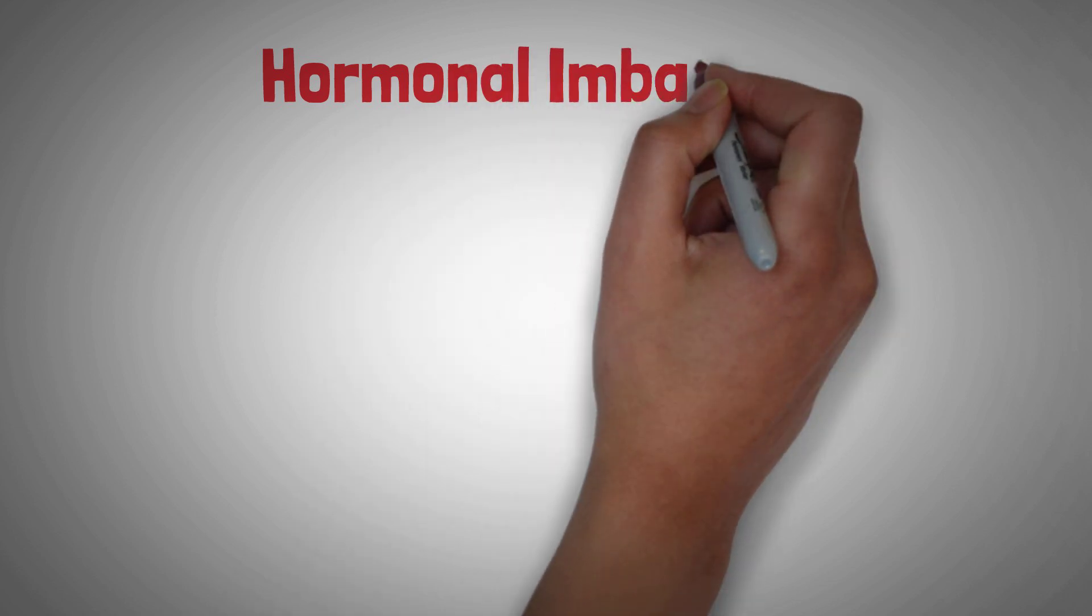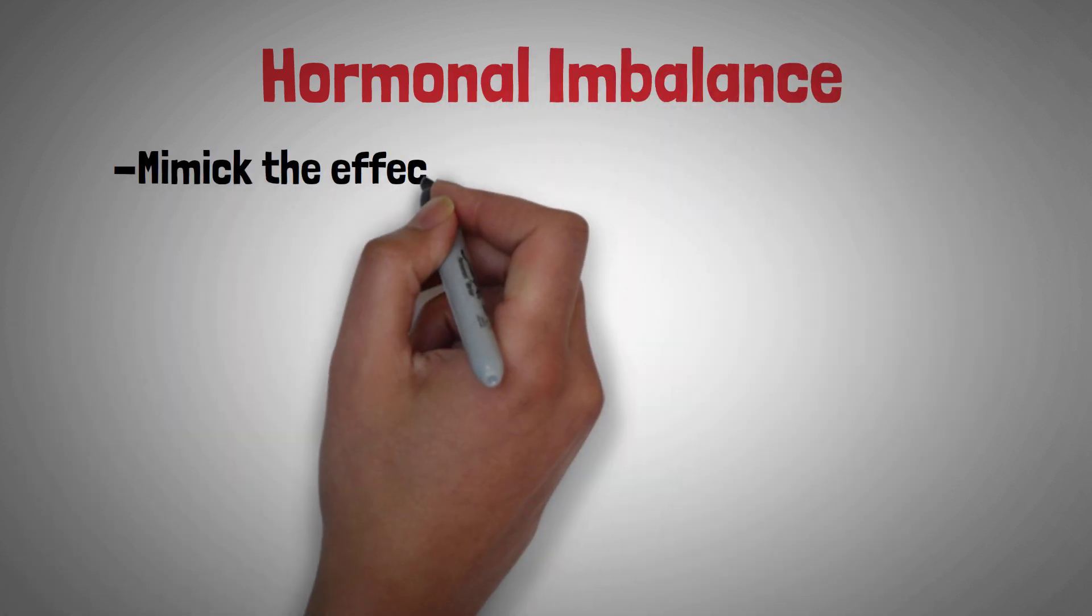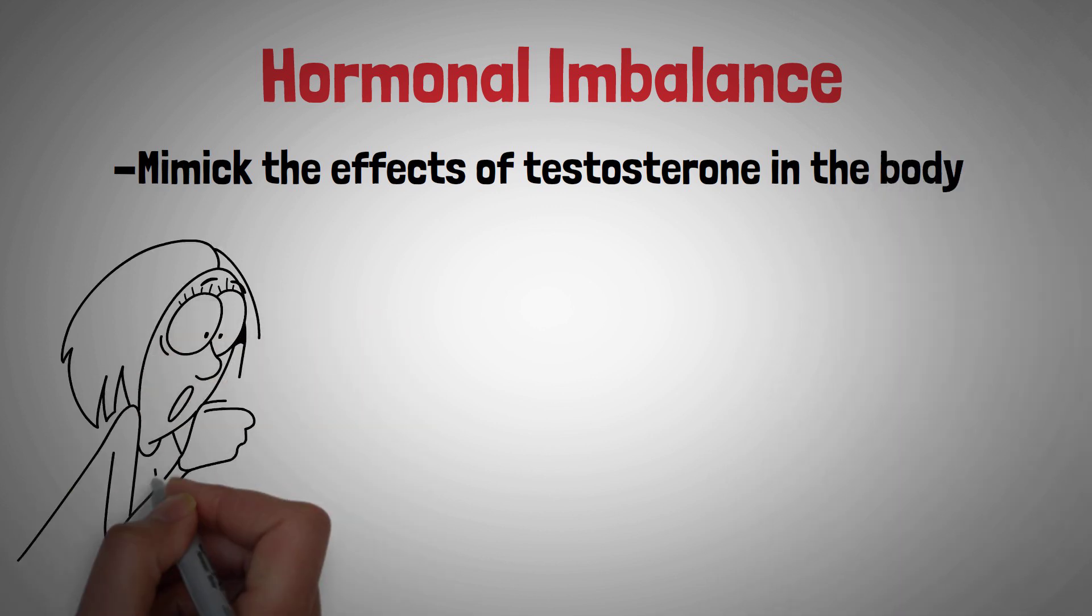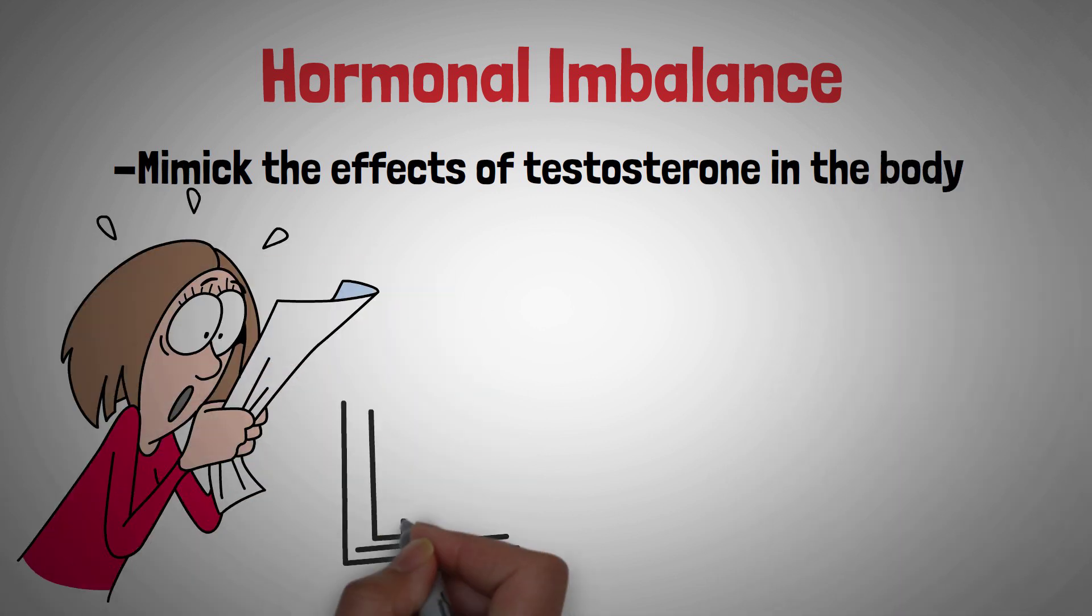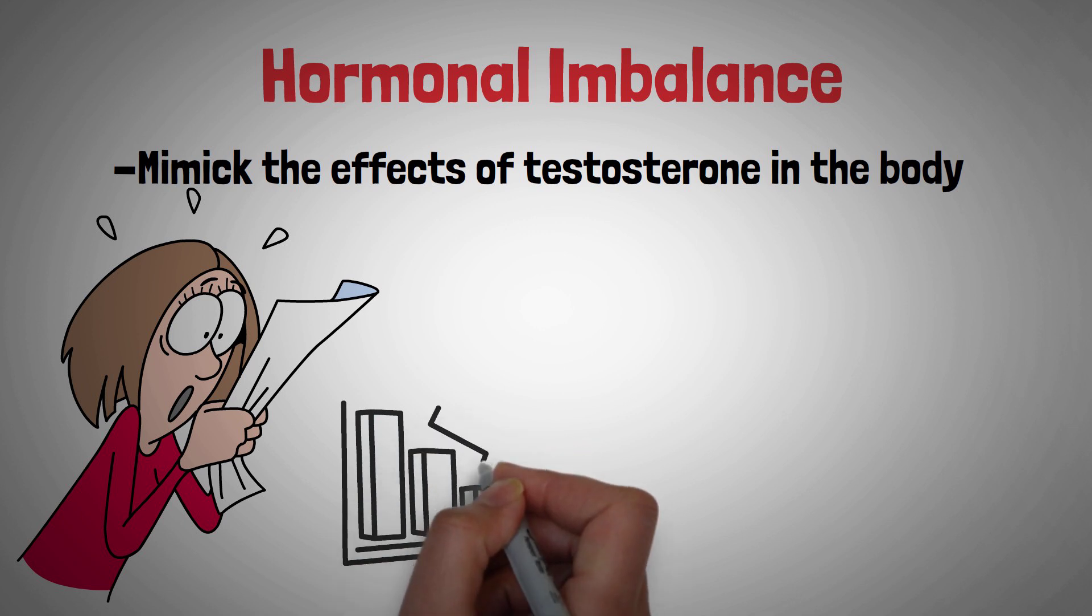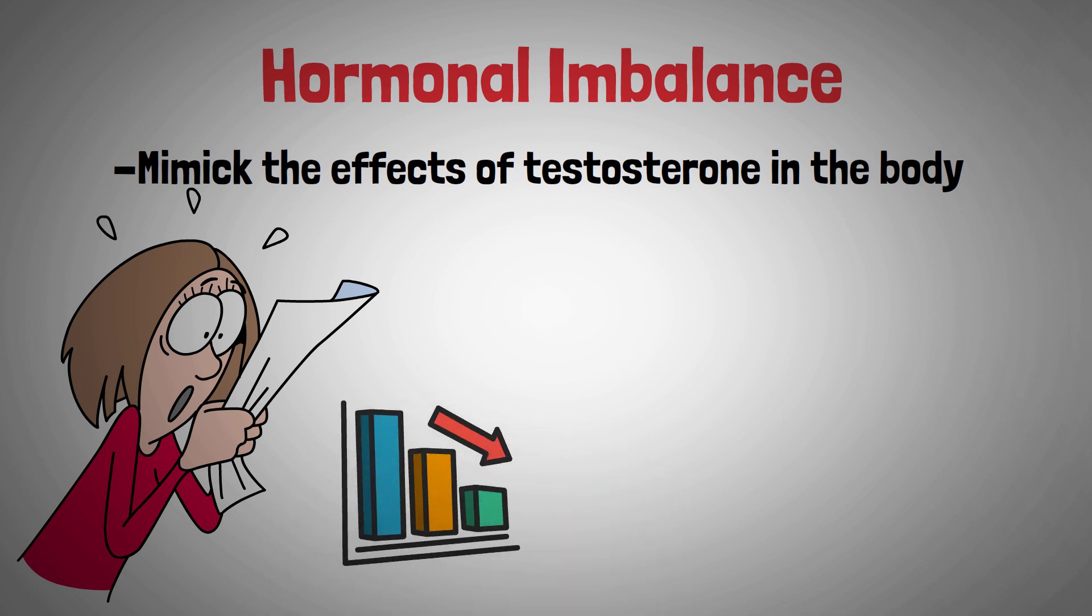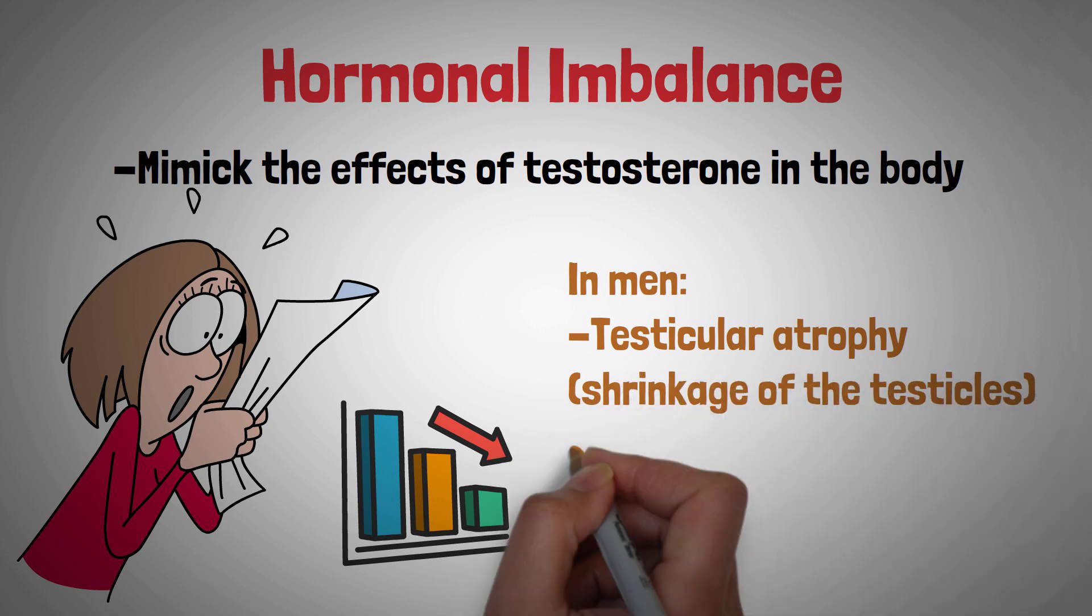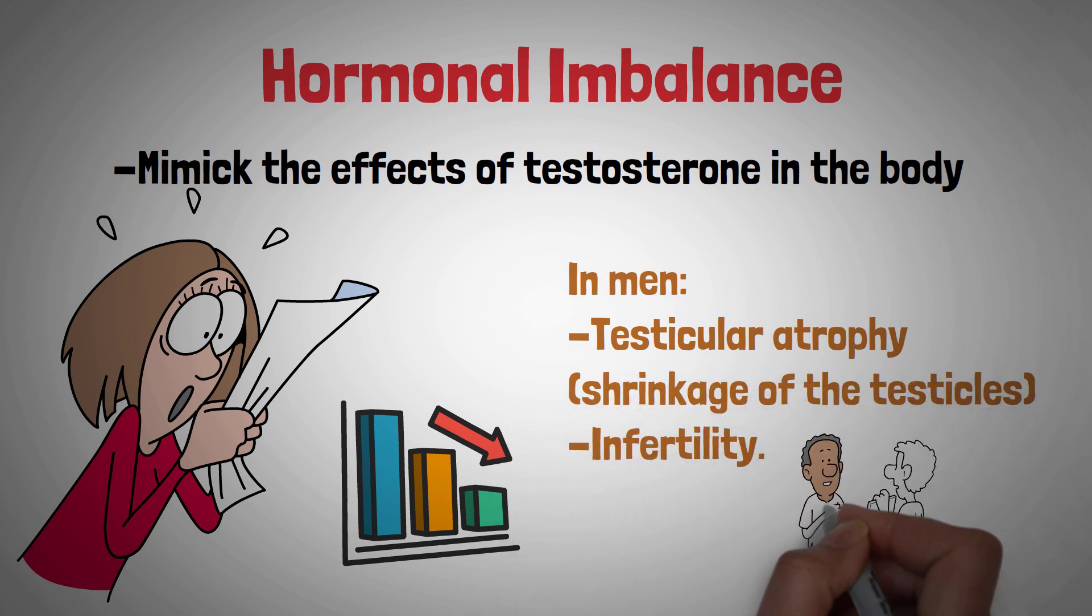Steroids work by mimicking the effects of testosterone in the body, which can disrupt the delicate balance of hormones. In men, this can lead to a decrease in natural testosterone production, resulting in testicular atrophy, which is shrinkage of the testicles, and infertility.